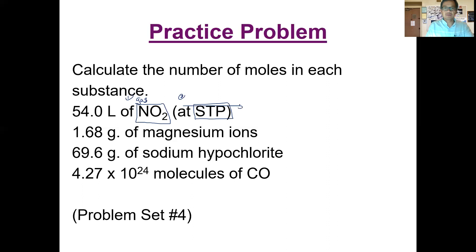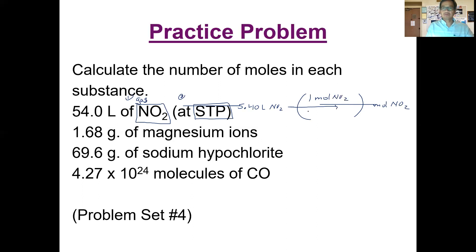So we have 5.40 liters of nitrogen dioxide gas and we're going to solve for the moles of nitrogen dioxide. Our conversion factor is the molar volume — we divide by it: one mole of NO₂ per 22.4 liters of NO₂. We plug that in and get our answer: 2.41 moles of NO₂.